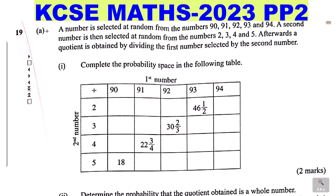From the statement, the quotient is obtained by dividing the first number — which is 90 to 94 — by the second number, which is 2 to 5. You're supposed to complete this table. Notice the table has been filled with mixed numbers, so ensure that you write your answers as mixed numbers when filling the table.